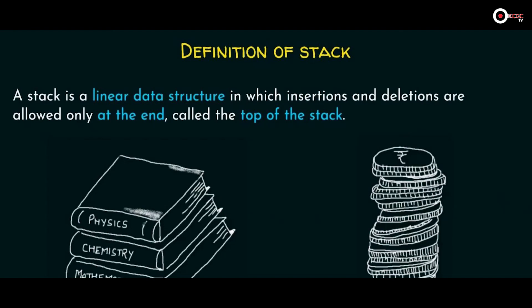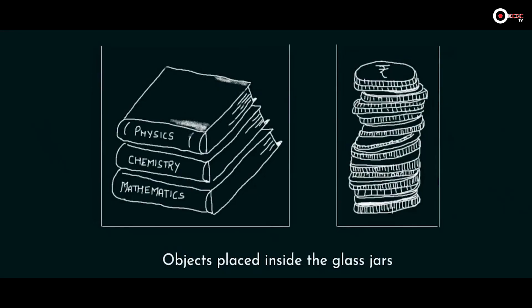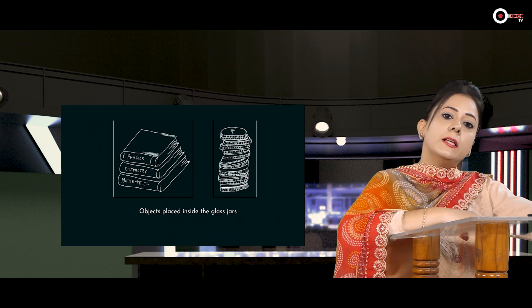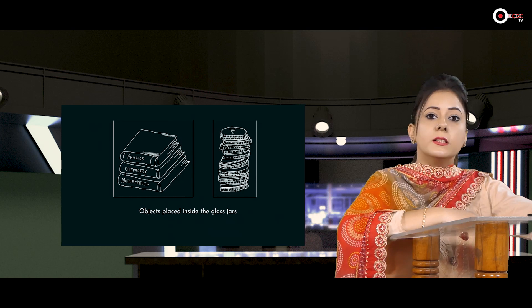After arrays, the next type of data structure is stack. A stack is a linear data structure in which insertion and deletion are allowed only at one end, called the top of the stack. Unlike an array where insertions and deletions can be done from anywhere, in a stack they can only be done from the top. Consider a stack of books or a stack of coins — the topmost item is the one most easily accessed. If these books and coins are placed in a glass jar, it becomes impossible to pick any item from the middle. That glass jar represents our stack.